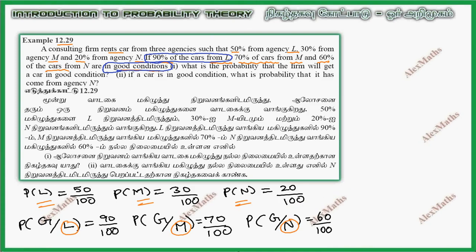Further question: What is the probability that the firm will get a car in good condition? P of G. That is the first subdivision.